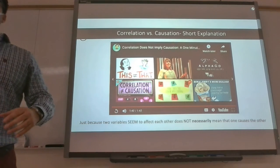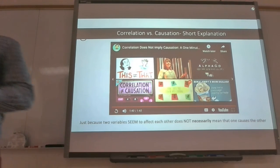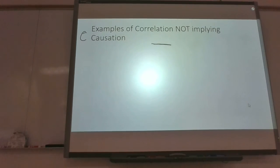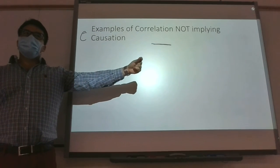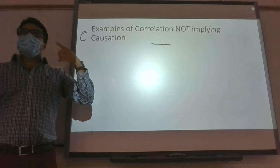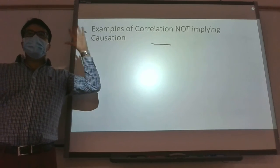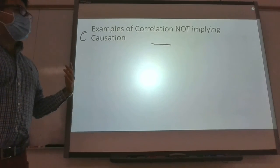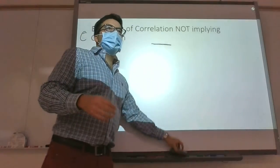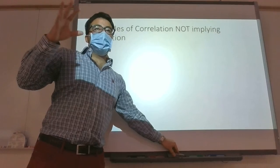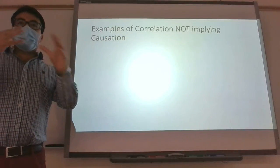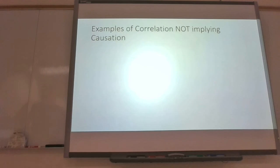Even if two variables do cause each other directly, another issue is that we don't know which direction it goes. Maybe shark attacks affect ice cream sales — we don't know which one is the independent variable and which is the dependent. Even on a graph you might see a correlation but not know which is independent or dependent. A lot of times you can take your best shot, but you need to analyze the data more deeply — it's not as easy as just looking at a graph.